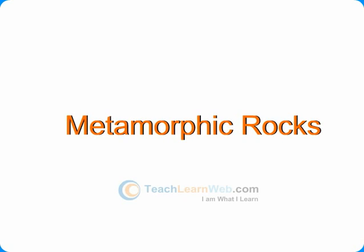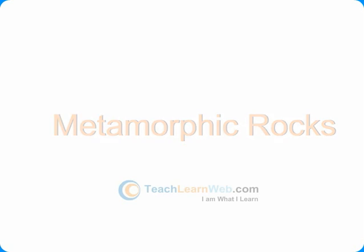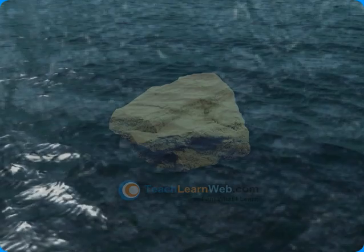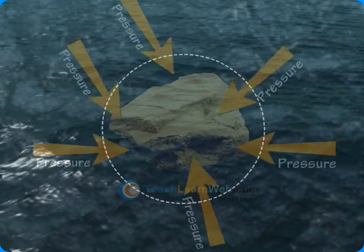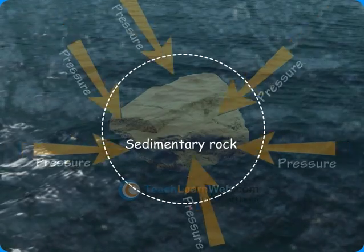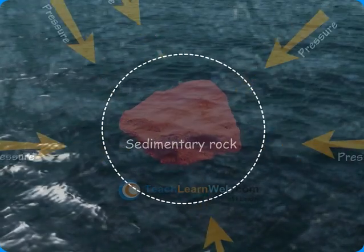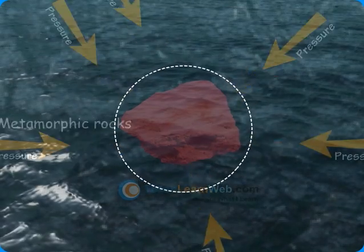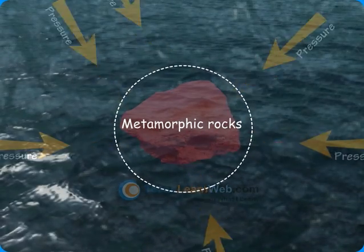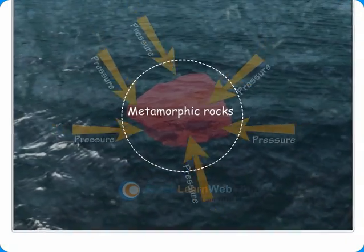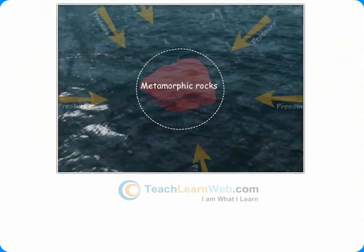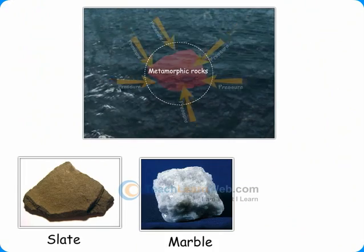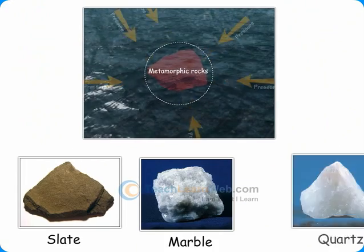Metamorphic rocks are formed by the action of intense pressure on sedimentary rocks such that their structure is changed. Examples of metamorphic rocks are slate, marble, and quartz.